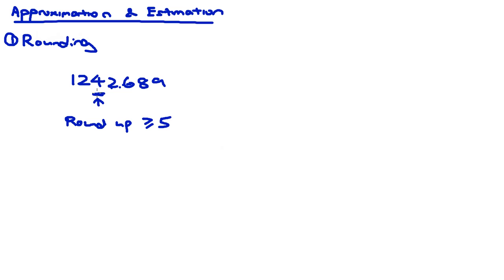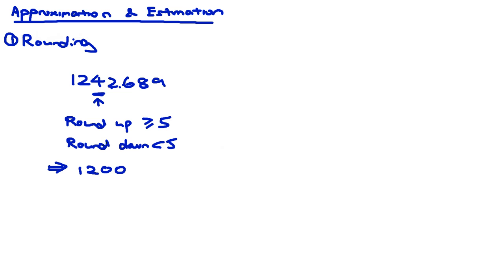In this case, we are doing a round down because the tens digit is less than 5. So the answer, if asked to round 1242.689 to the nearest hundred, is 1200. You only need to look at the tens digit: if it's 5 or more, round up to 1300; since it's 4, we round down to 1200.